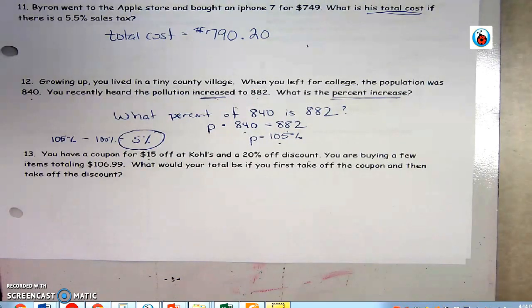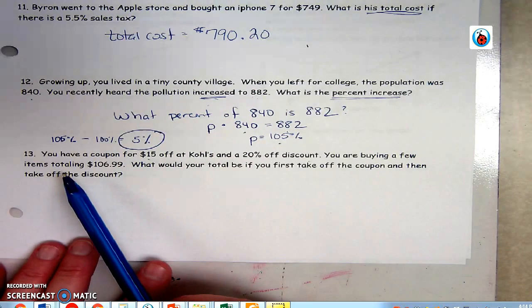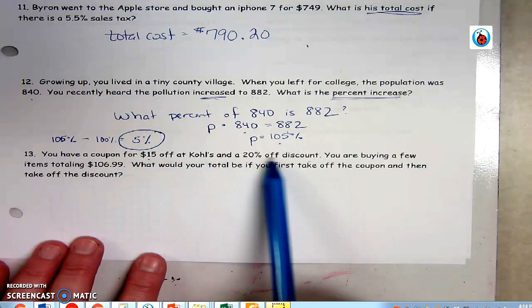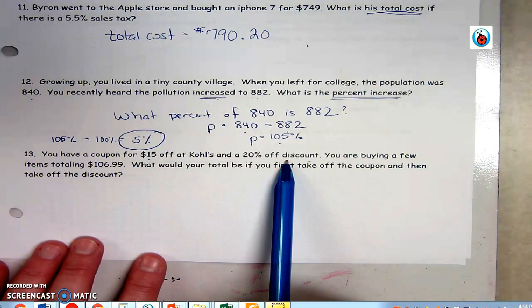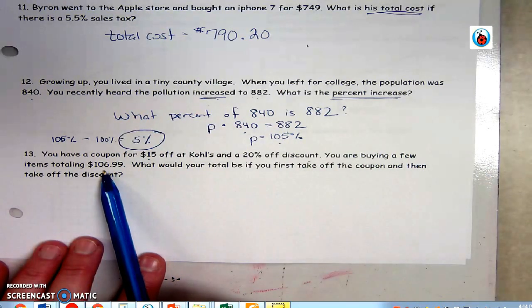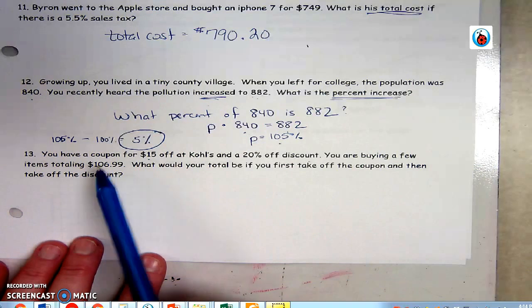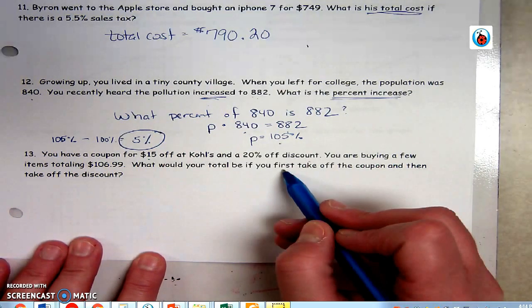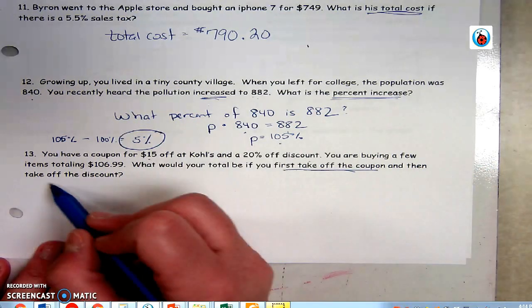Number 13 is a real-life problem. This happens all the time with people when they're shopping at Kohl's. They have a coupon for $15 off, maybe Kohl's cash, and a 20 percent off discount. So you're buying some items that cost this much money. What would your total be if you first take off the coupon, take off means subtract, then take off the discount?